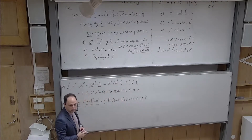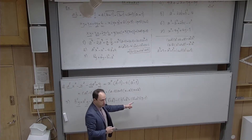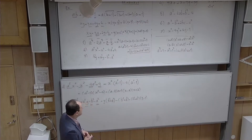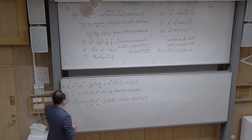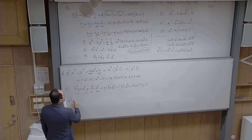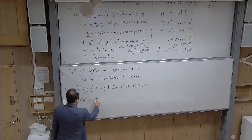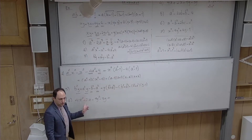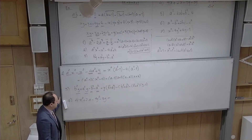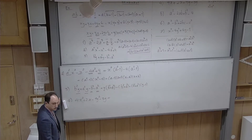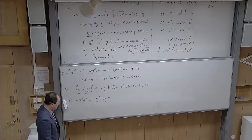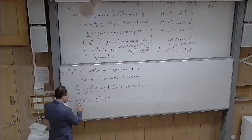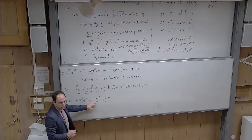The trick for breaking the middle term: multiply the leading coefficient by the constant term (here 2 × 1 = 2). Find two numbers whose sum equals the middle coefficient (3) and whose product equals that product (2). Those numbers are 1 and 2. So break 3x into 2x + x. This method still involves some guesswork, but it is systematic. If you want no guesswork at all, use the longer ABC formula recipe.